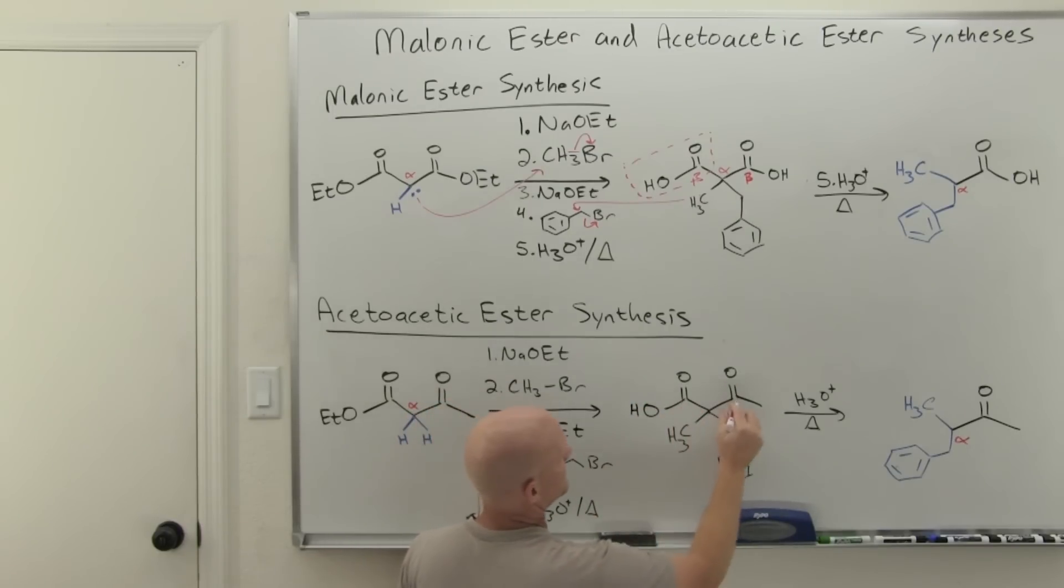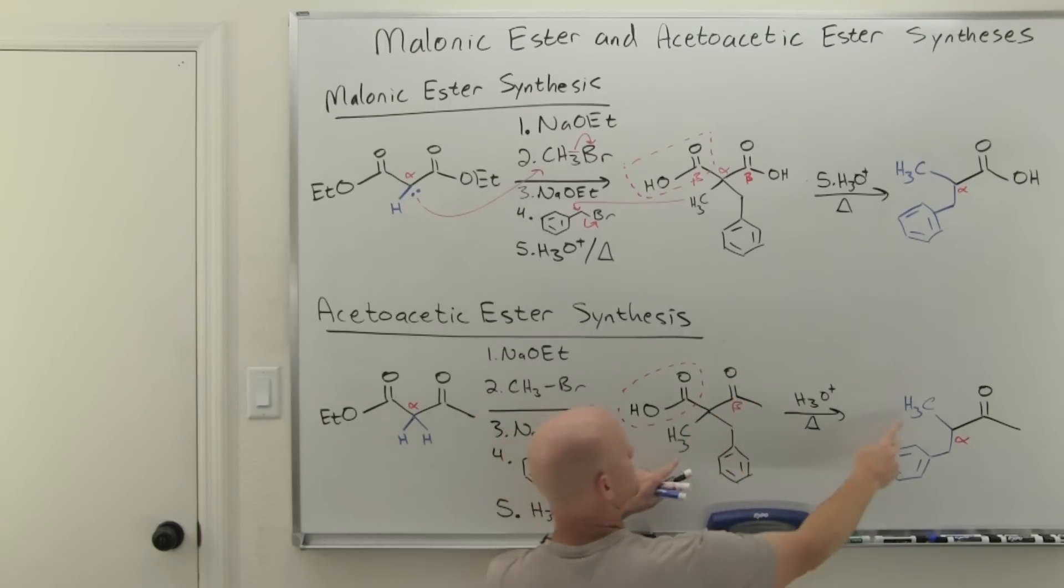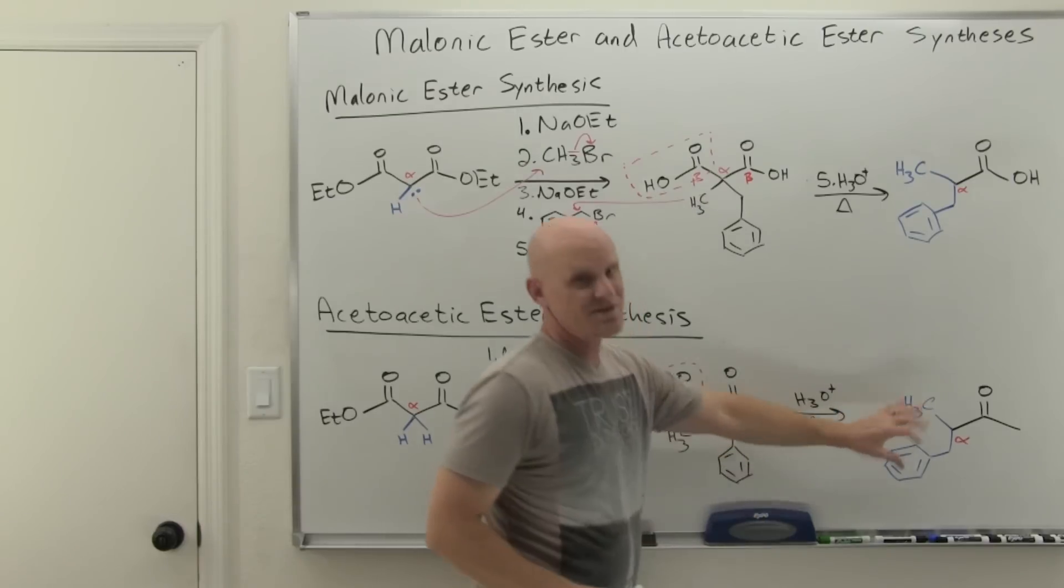And so it's not going to be heat stable. And so as it's heated, that is going to be lost, that carboxyl is going to be lost as carbon dioxide. And you see what you're left with? We're just left with a methyl ketone on this side, and then the alpha carbon bonded to a methyl group and a benzyl group. And that is your synthesis.